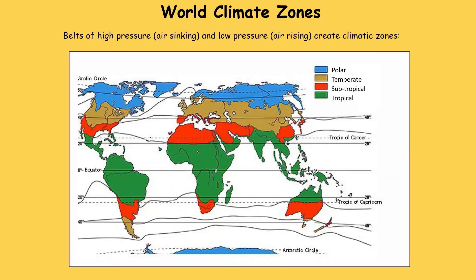Here is a map of the world showing the distribution of these four climate zones. Around the middle of the earth at 0 degrees you can see the tropical zone. The red areas are subtropical at approximately 30 degrees north and south, where the deserts are. The brown areas at approximately 60 degrees north and south are the temperate zones. And finally, the polar areas are found to the very north and south of the earth.